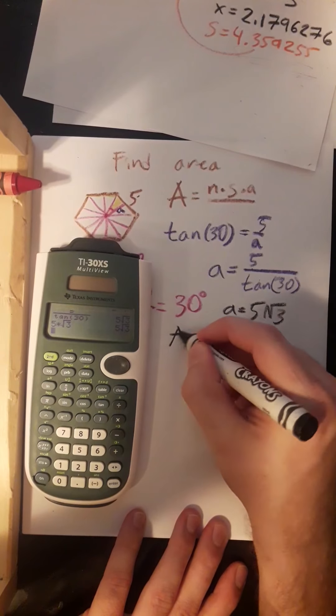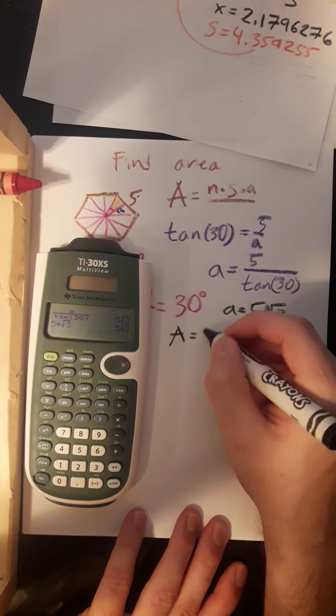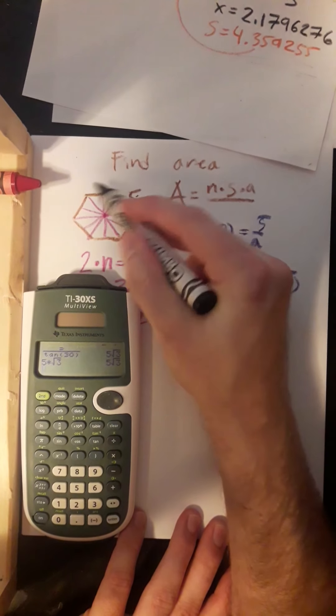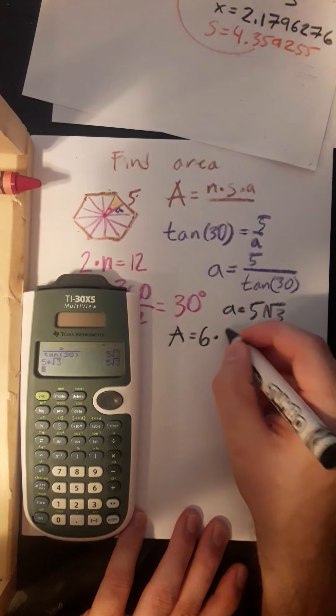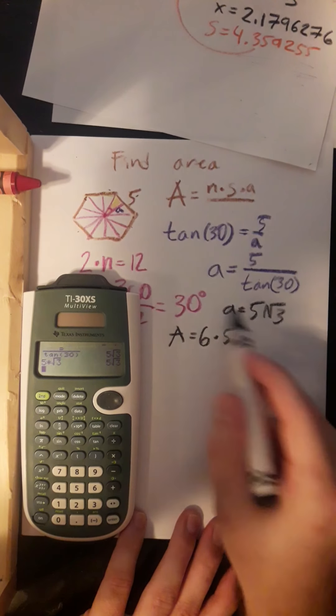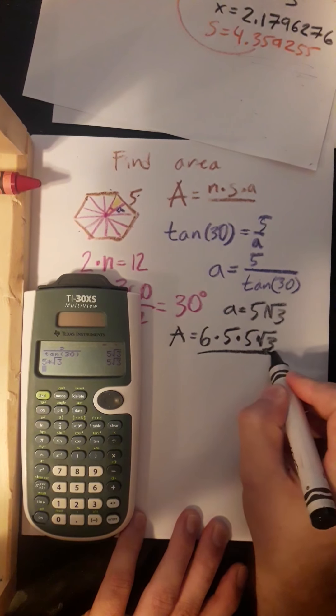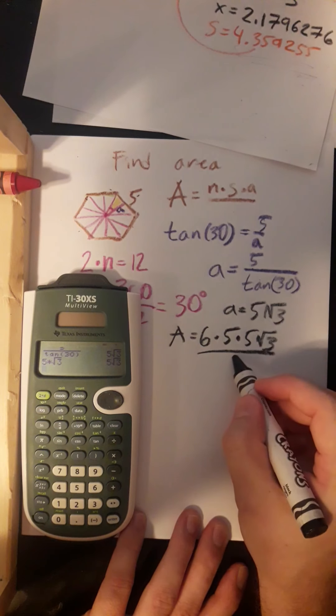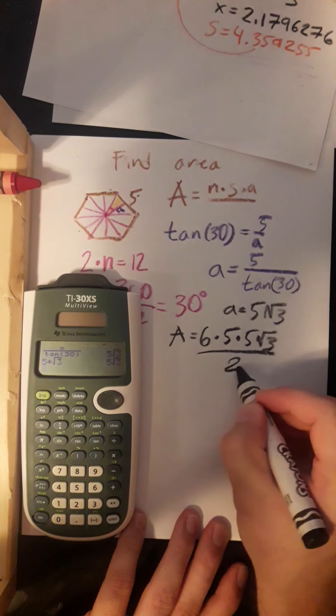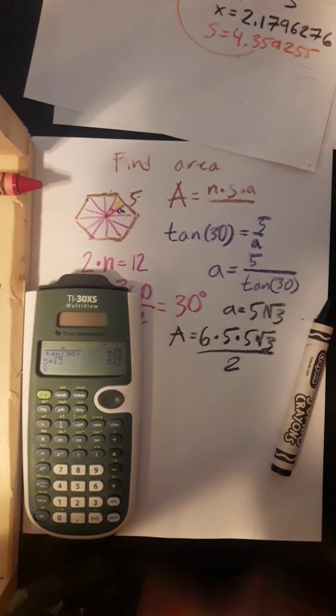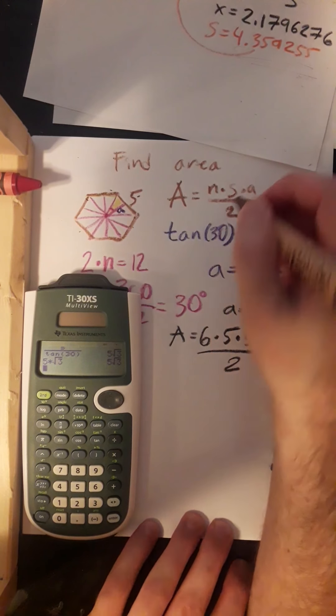So I now know that area is equal to number of sides, which is 1, 2, 3, 4, 5, 6, times the side length, which is 5, times the apothem, which is 5 square root of 3. You know, I never wrote the entire formula. This is all over 2. I apologize.